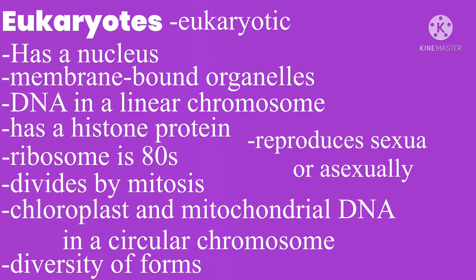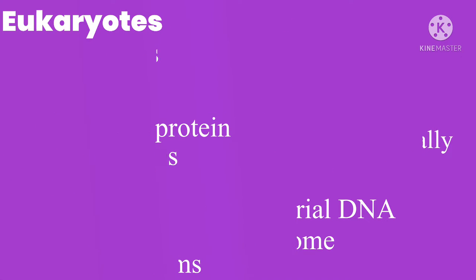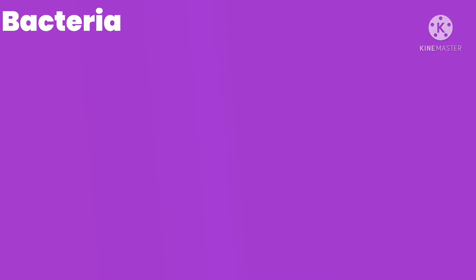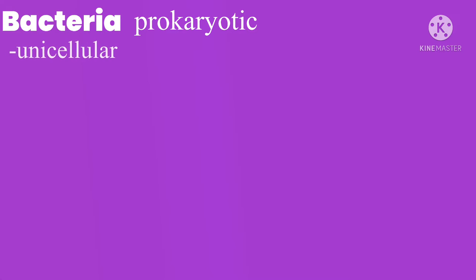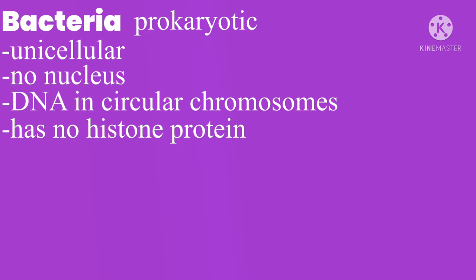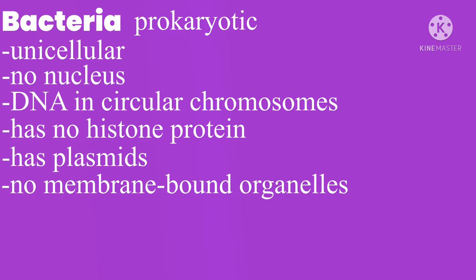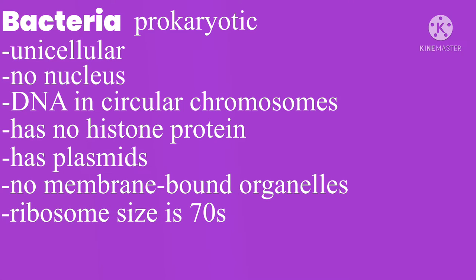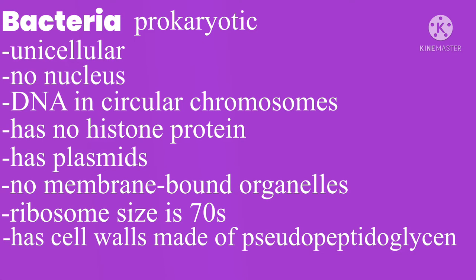Domain Eukaryotes also reproduces sexually or asexually. And finally, domain Bacteria. They are prokaryotic, and the characteristic features are unicellular, no nucleus, and DNA exists in a circular chromosome. This time, it doesn't have histone proteins. It has plasmids, which are circular DNA, and no membrane-bound organelles. The size of the ribosome is 70S, which is smaller than eukaryotic cells. It has a cell wall made of pseudopeptidoglycan, and it divides by binary fission.